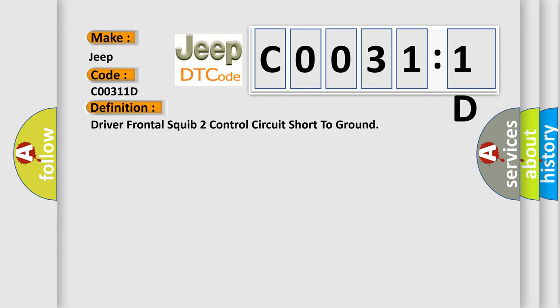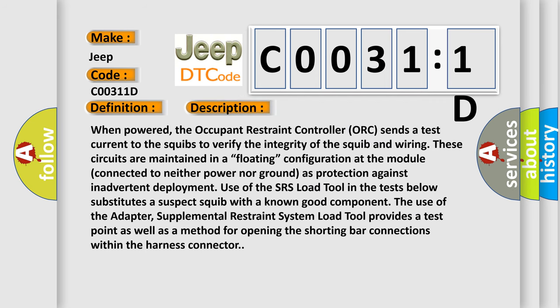And now this is a short description of this DTC code. When powered, the Occupant Restraint Controller (ORC) sends a test current to the squibs to verify the integrity of the squib and wiring. These circuits are maintained in a floating configuration at the module, connected to neither power nor ground as protection against inadvertent deployment. Use of the SRS load tool in the tests below substitutes a suspect squib with a known good component.